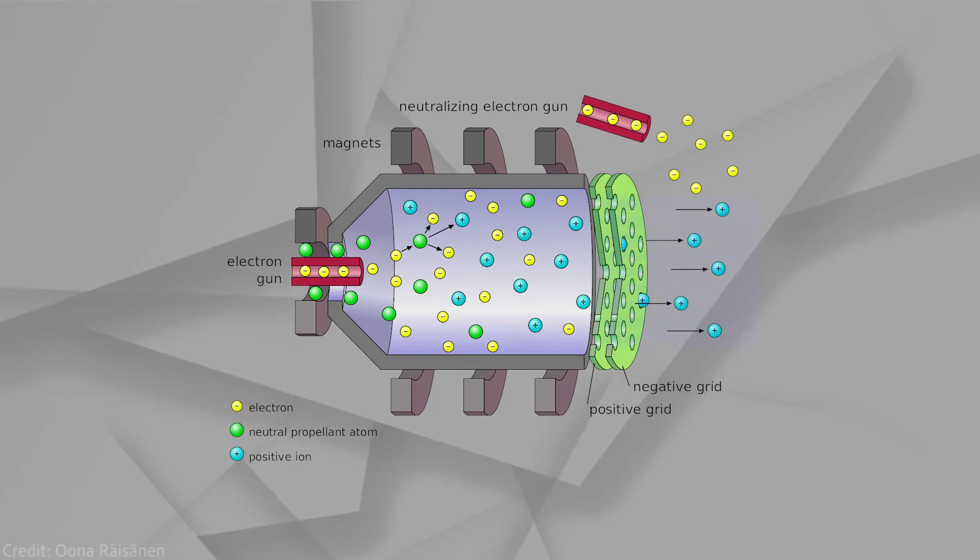And here is where high energy electrons come from, those yellow spheres. They obviously have negative charge, and they collide with neutral atoms, and that strips away electrons from those atoms. And the atoms become positively charged xenon ions.